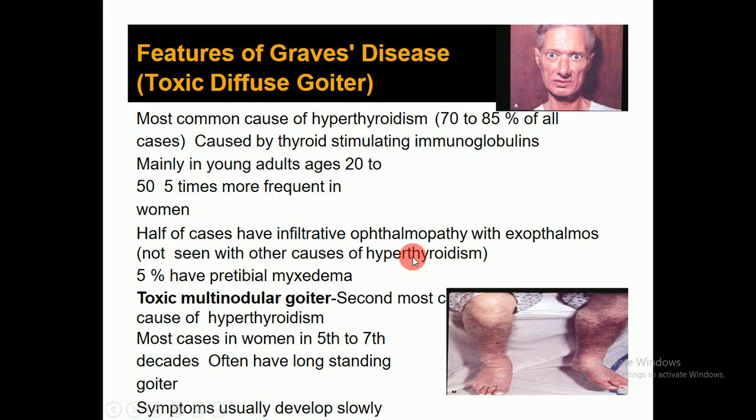Half of Graves' disease cases have infiltrative ophthalmopathy with exophthalmos, not seen with other causes of hyperthyroidism. Five percent have pretibial myxedema. Toxic multinodular goiter is the second most common cause of hyperthyroidism, most cases in women in the 6th to 7th decades; often have long-standing goiters, and symptoms usually develop slowly and insidiously.